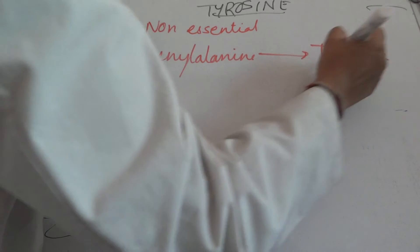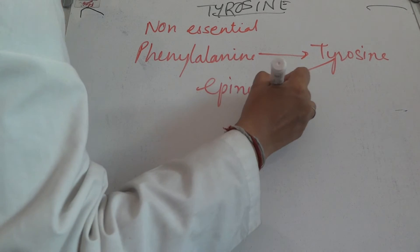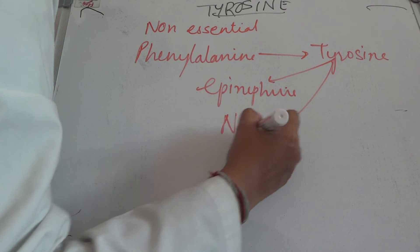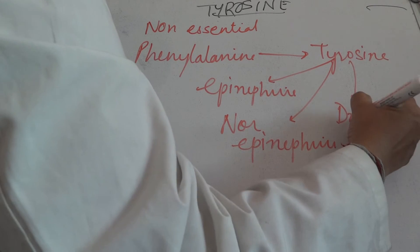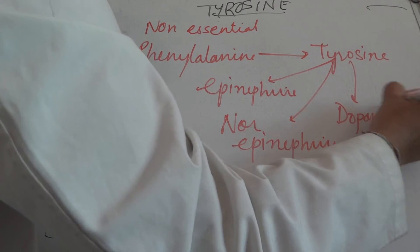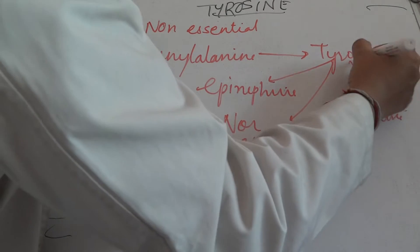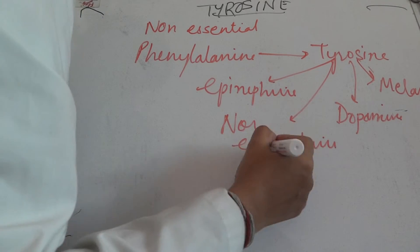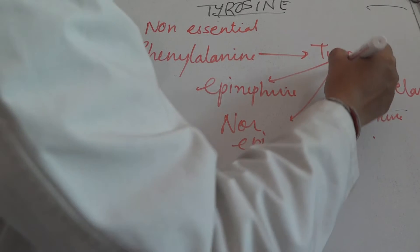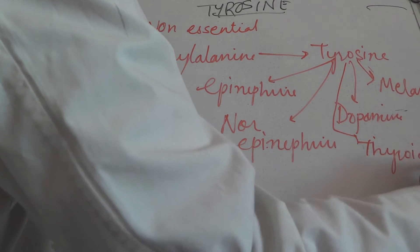Tyrosine leads to the formation of epinephrine, norepinephrine, dopamine, melanin, and thyroid hormones.